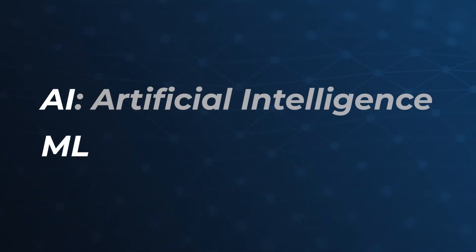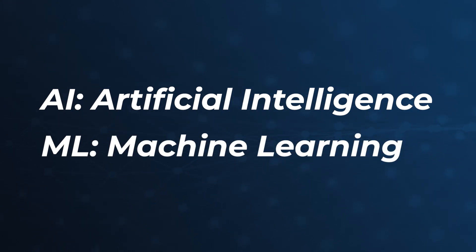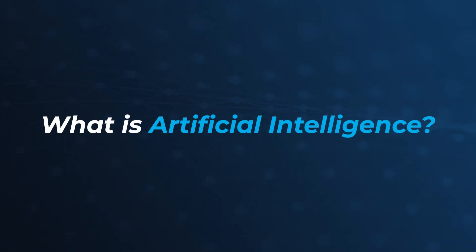AIML is short for Artificial Intelligence and Machine Learning. But what do they mean and how are they different? Let's start with a definition provided by ChatGPT.